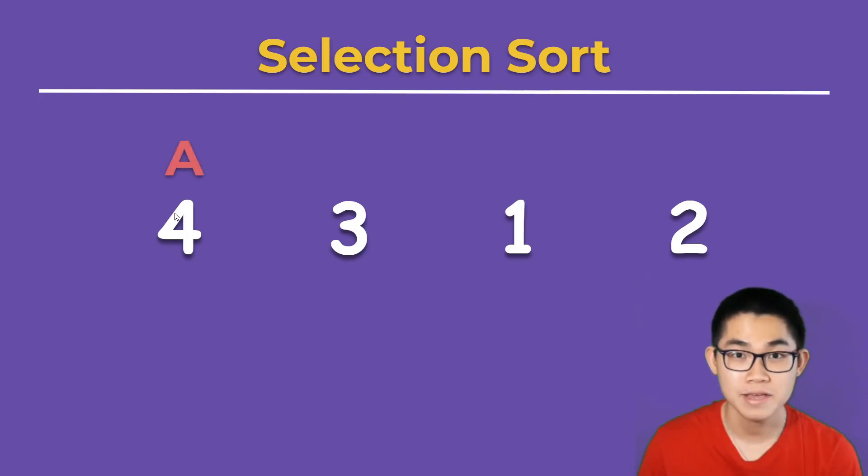We put A on the array. We assume that 4 is the smallest number. We put B right next to A, and B is going to find us a smaller number. So 3 is smaller than 4, so 3 becomes the smallest number.